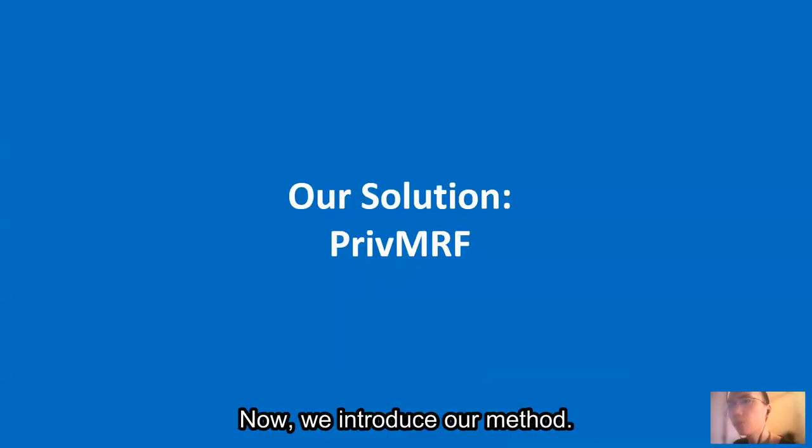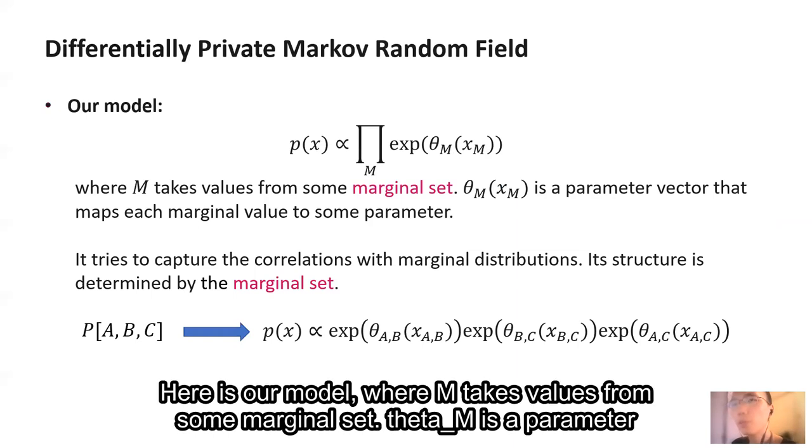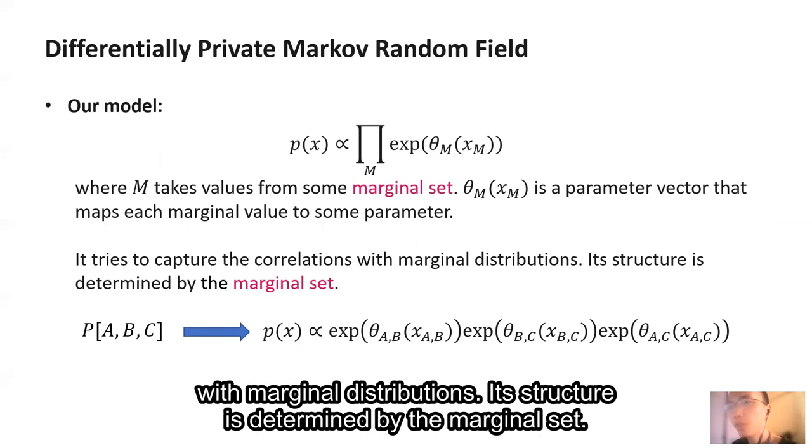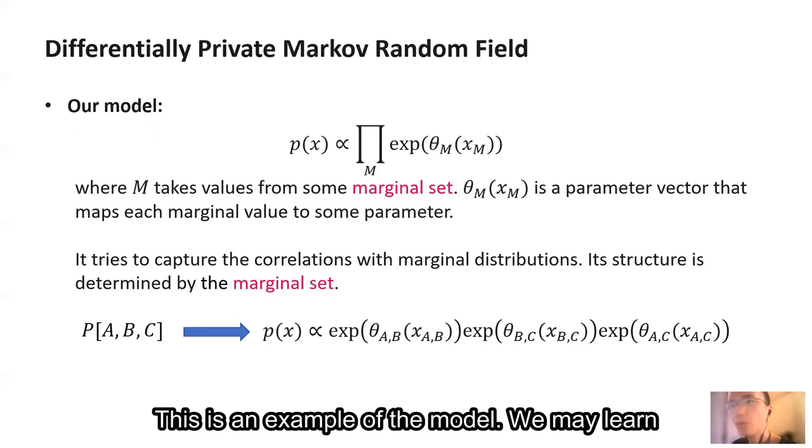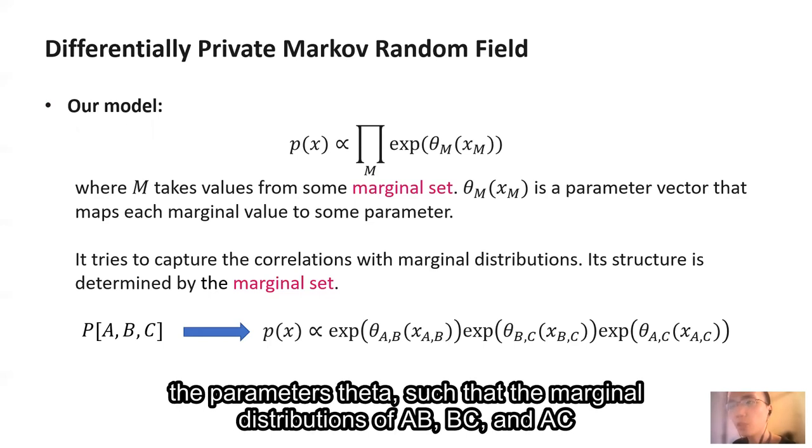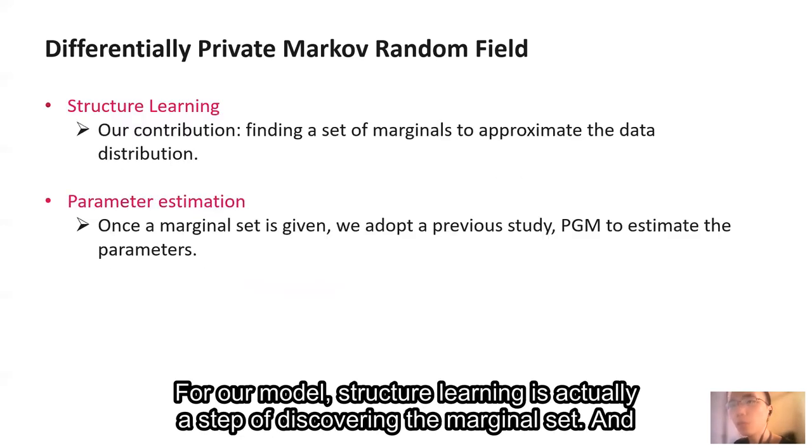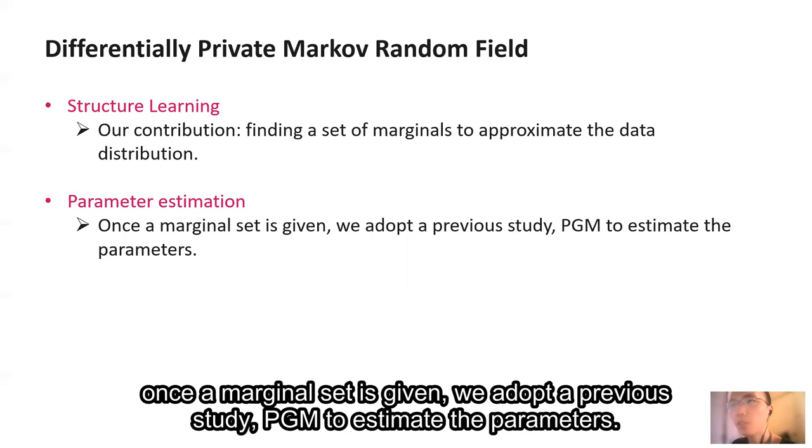Now we introduce our method. Here is our model, where M takes values from some marginal set. Theta M is a parameter vector that maps each marginal value to some parameter. It tries to capture the correlations with marginal distributions. Its structure is determined by the marginal set. This is an example of the model. We may learn the parameters theta such that the marginal distributions of AB, BC, and AC of the model are the same as those of the data distribution. For our model, structure learning is actually a step of discovering the marginal set. And once a marginal set is given, we adopt a previous study PGM to estimate the parameters.